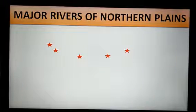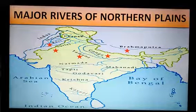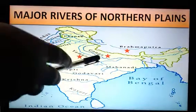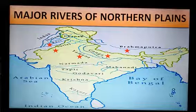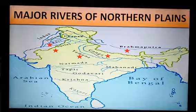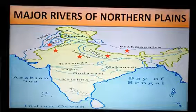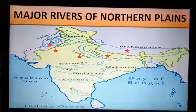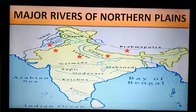There are many rivers that flow in the Northern Plains. They are Ravi, Sutlej, Yamuna, Ganga and Brahmaputra. These rivers flow through the Northern Plains and carry sand and silt with them, which gets deposited in the plains, making the soil very fertile and ideal for growing crops.